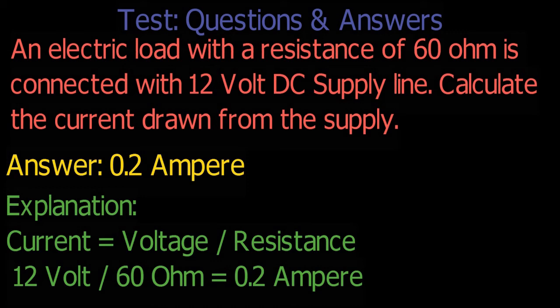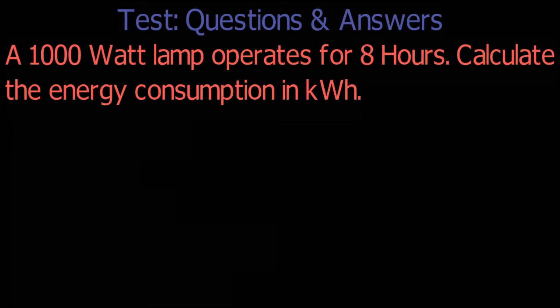Question number 3. A 1,000 watt lamp operates for 8 hours. Calculate the energy consumption in kilowatt hour.